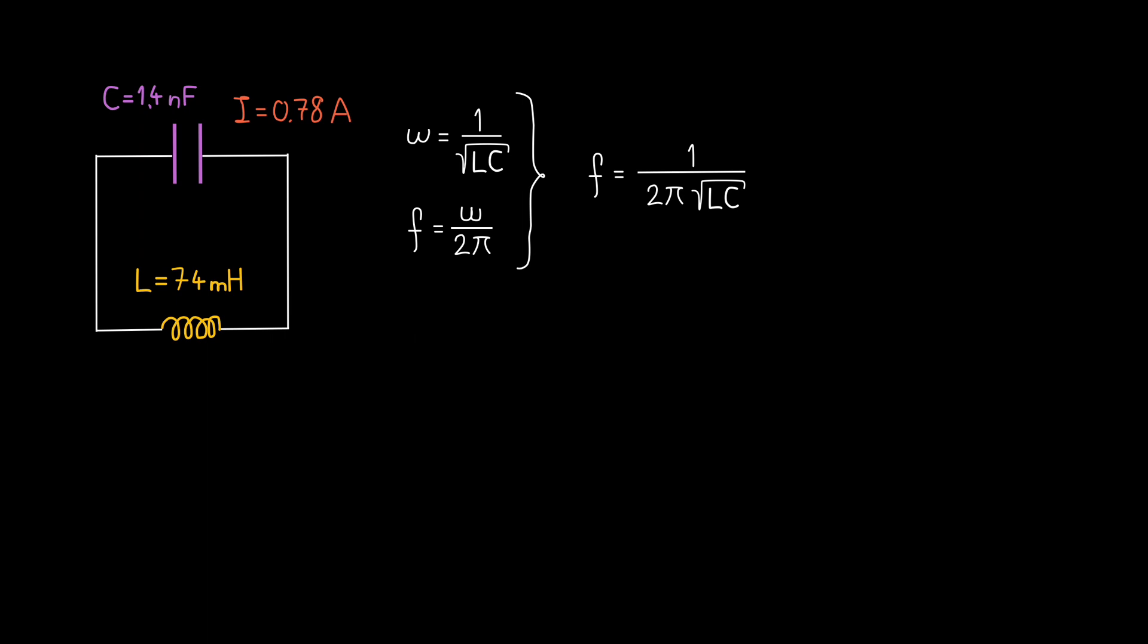what is the oscillation frequency of this LC circuit? The angular frequency of the circuit is equal to 1 over square root of L times C. It depends on the physical properties of the circuit. Frequency is angular frequency divided by 2 pi. When we combine the two formulas, we get frequency equals 1 over 2 pi square root of LC.